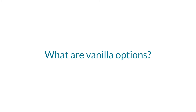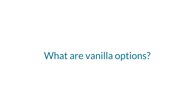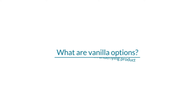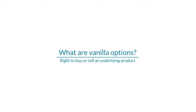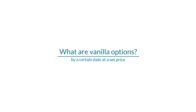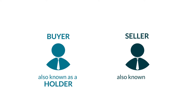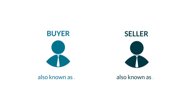What are vanilla options? The term vanilla option simply refers to a normal option, not a binary option. A vanilla option offers the right to buy or sell an underlying product by a certain date at a set price. There is a buyer, also known as a holder, and a seller, also known as a writer, for each option trade.